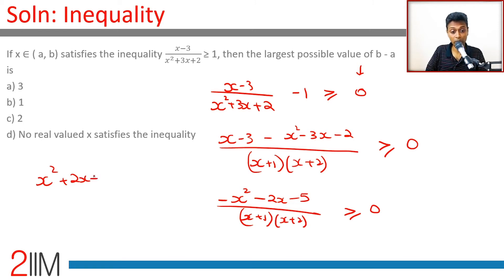Or (x² + 2x + 5)/(x + 1)(x + 2) ≤ 0. Brilliant.